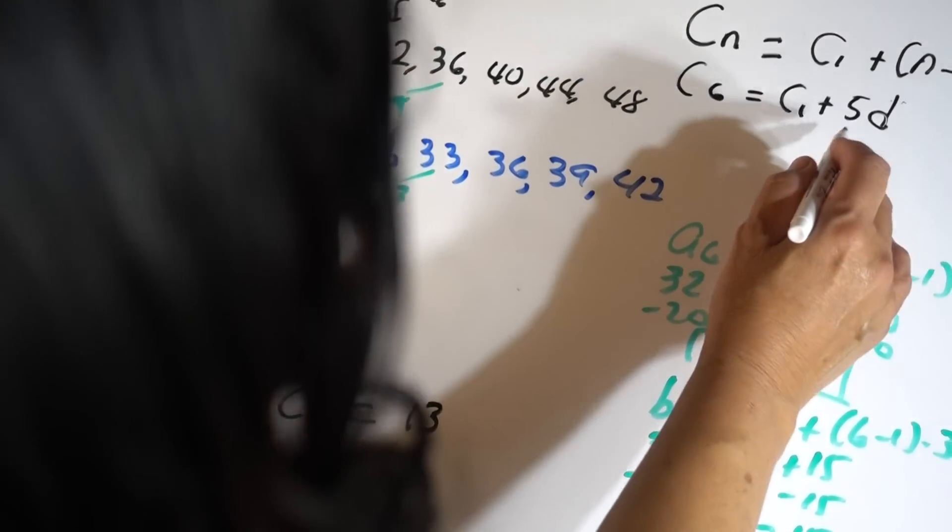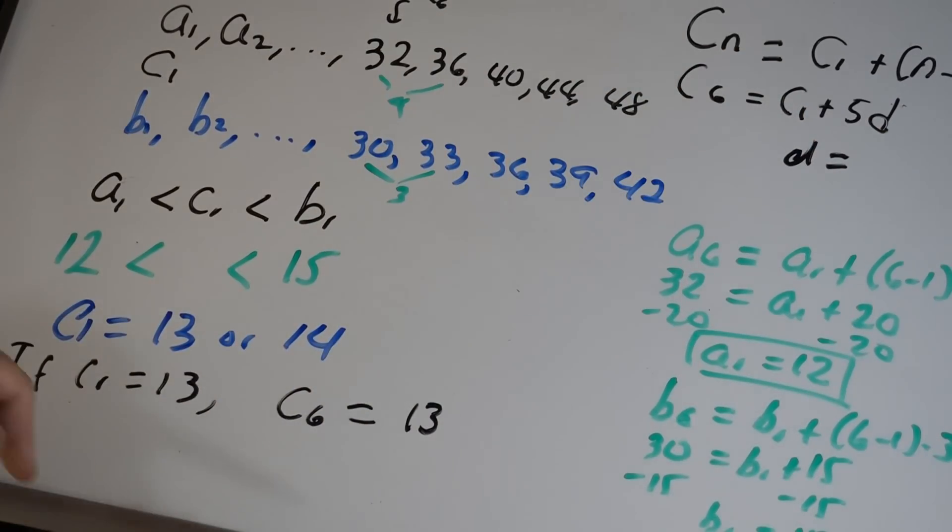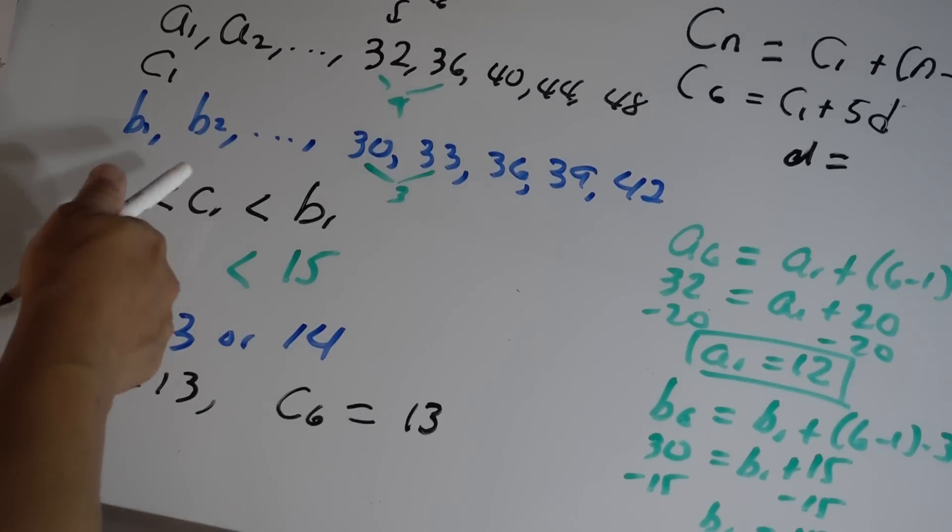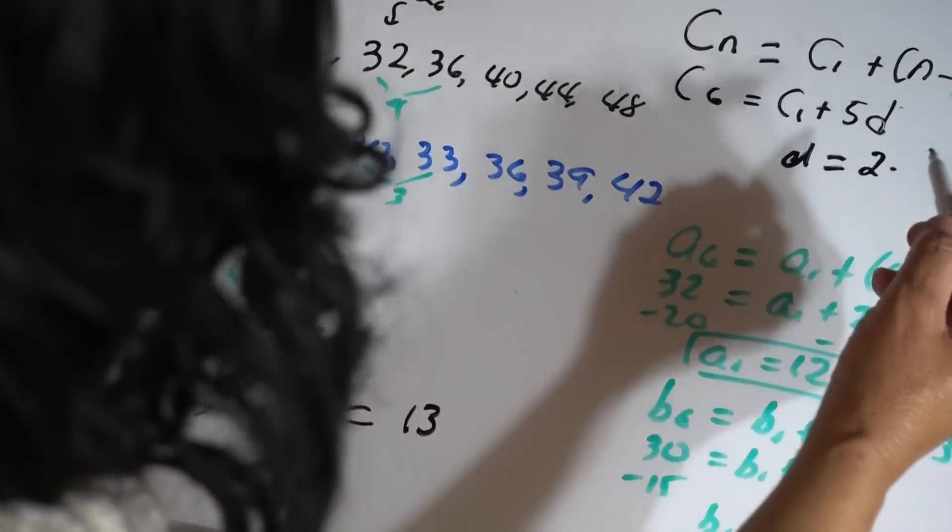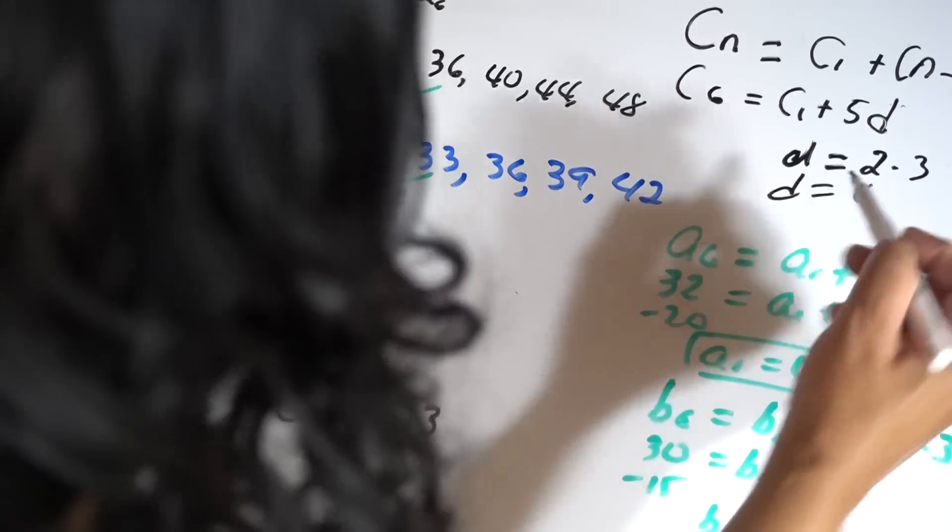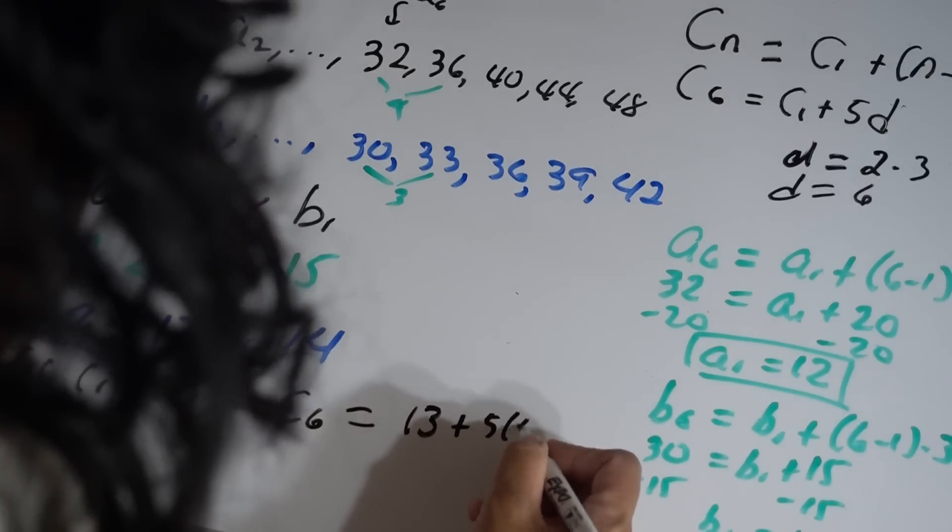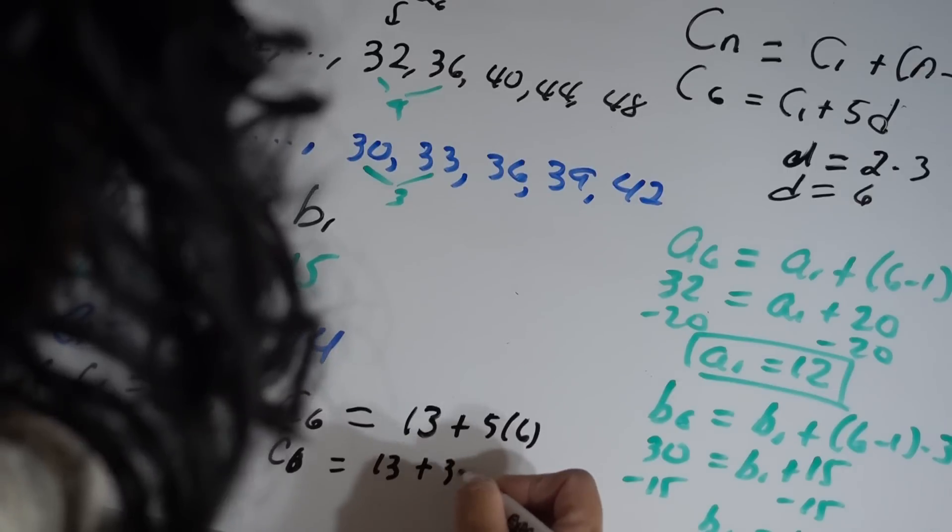The difference d right here, I'm using d, is part of the information given in the problem. This is two times the difference of b_n. So this is two times the difference of b_n that we know is 3, so d is 6. So that's going to be 5 times 6. c_6 is going to be 13 plus 30, which is 43.